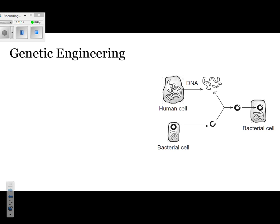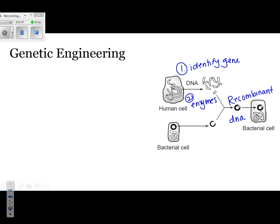What did they use to cut the DNA? They use enzymes. The first thing that they do is they identify the gene of interest, and then after they've identified the gene, they're going to use enzymes to cut the DNA. They've used enzymes on both the human DNA and the bacterial DNA — the same exact enzyme — so that eventually they can come together and form what's known as recombinant DNA. Recombinant DNA is when you have two different pieces of DNA and you've combined them together.